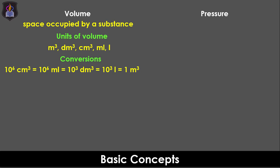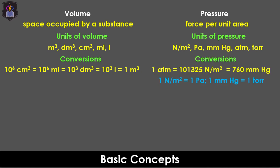Pressure, on the other hand, is the force a substance exerts on a surface per unit area and is measured in Newton per meter squared, Pascal, millimeters mercury, atmosphere, and torr. The relationship between these units is as shown on the screen. Note that 1 N/m² is equivalent to 1 Pascal while 1 mm Hg is equivalent to 1 torr.